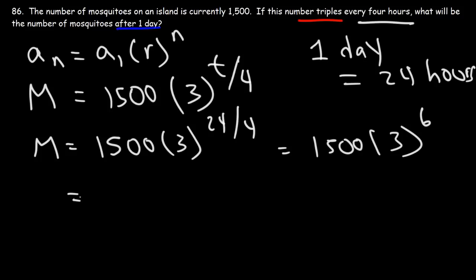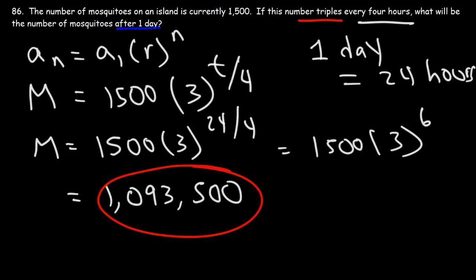So this is going to be 1,500 times 3 to the sixth power, and that's going to be one million ninety-three thousand five hundred. So that's going to be the number of mosquitoes on this island after one day, if it can continue to triple every four hours.